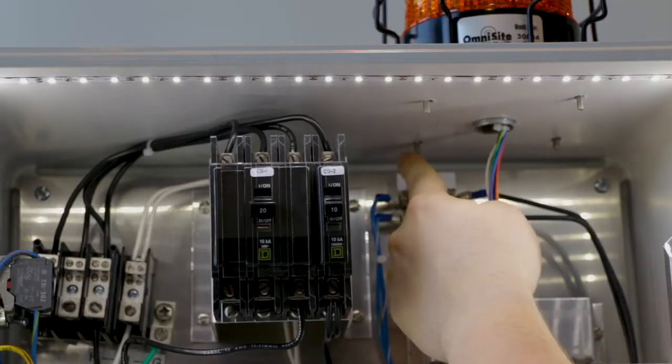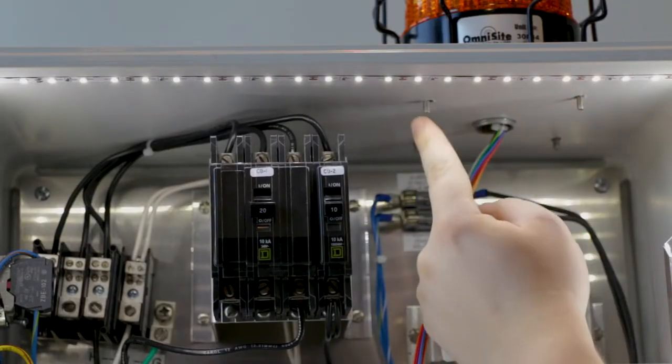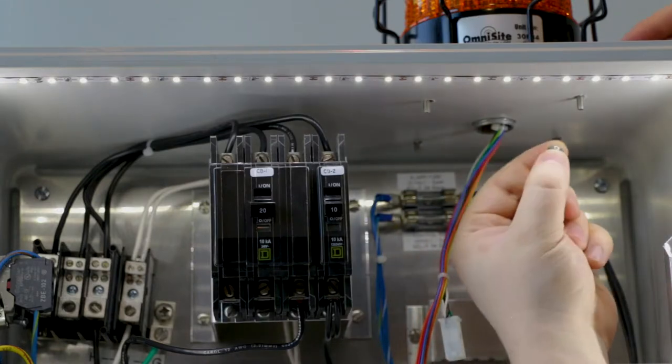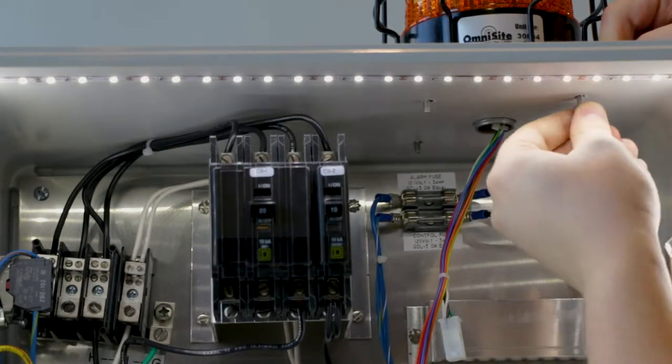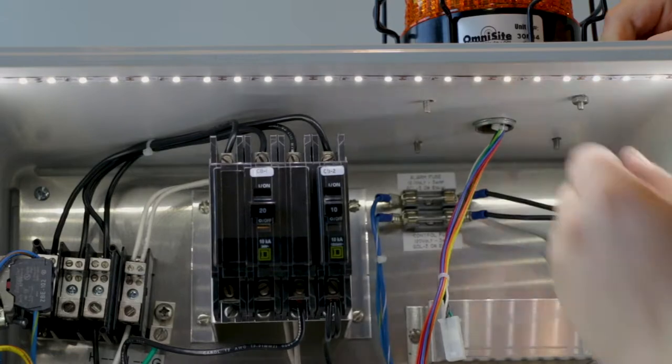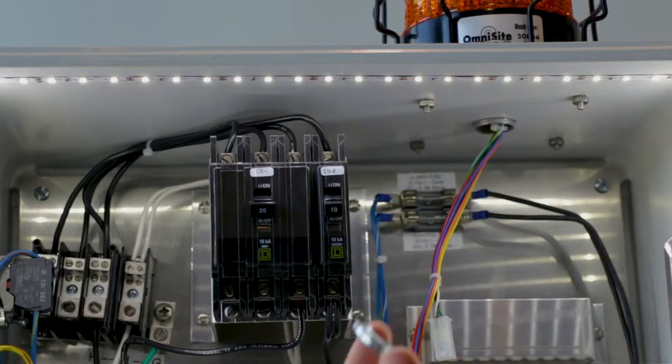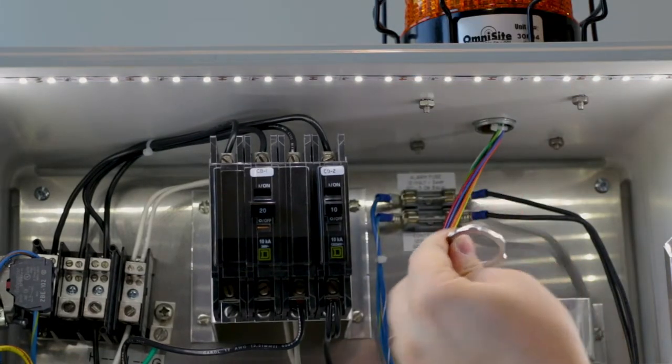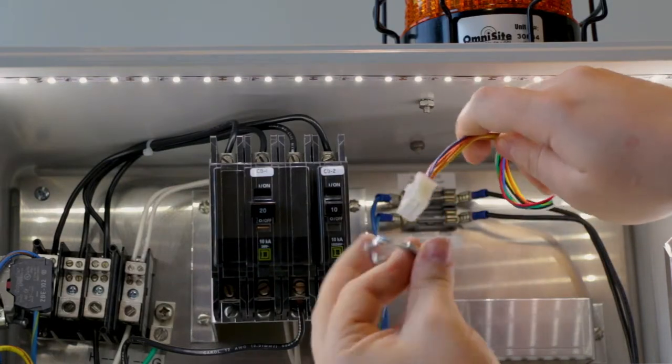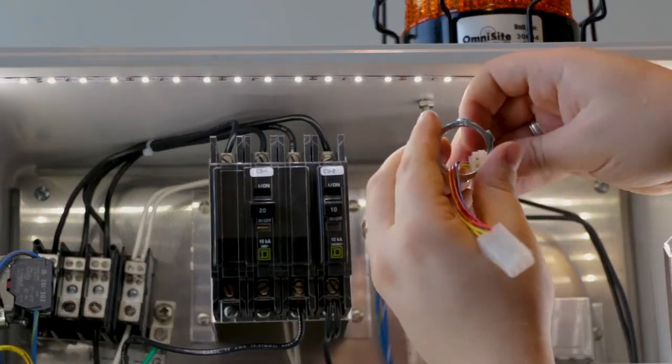Next, install the four lock nuts onto the four mounting bolts inside the panel. Now, thread the OmniBeacon wiring harness through the conduit nut and tighten it onto the bottom of the OmniBeacon.